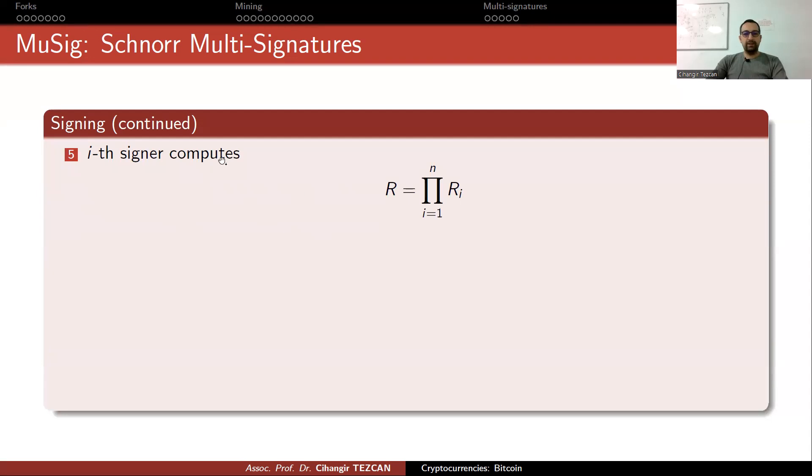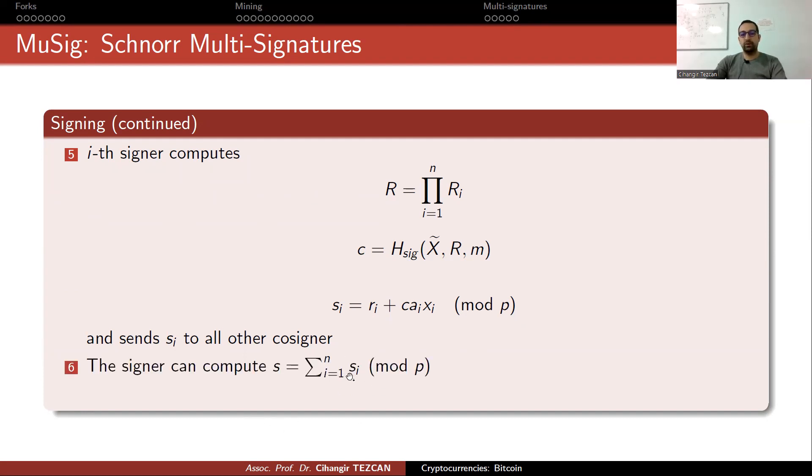Signing continues like this. Everybody multiplies these r_i values and obtain a single R. Then, you sign. This is the signature. So, you sign it like this, again, using a hash function. Calculate these s_i's and every signer sends s_i's to all other cosigners. The signer can compute by summing all of the s's, s_i's to obtain S. And the signature is R S. This is how you sign it.